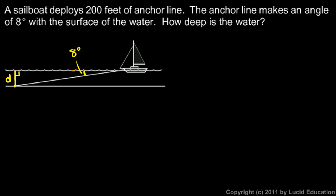So we can use which trig function? We have an angle, and we're looking for the side opposite the angle, and we know the hypotenuse here. We're told that the anchor line is 200 feet. The sine function should come to mind, because we're dealing with an angle and the opposite side and the hypotenuse.